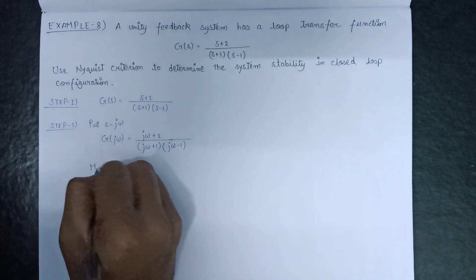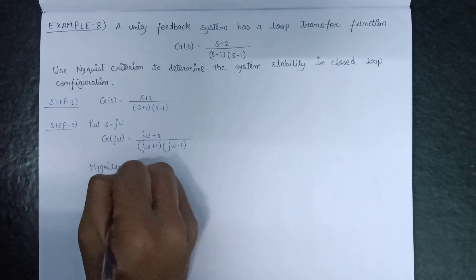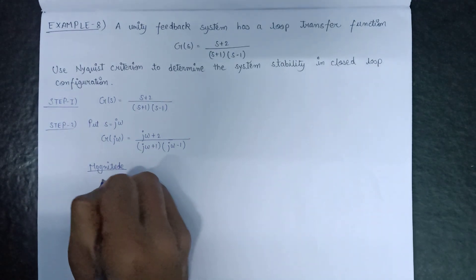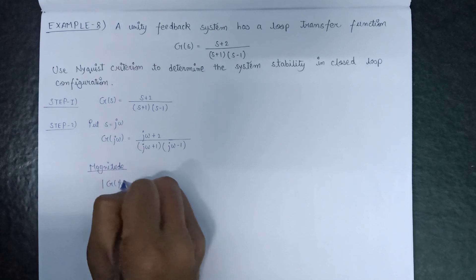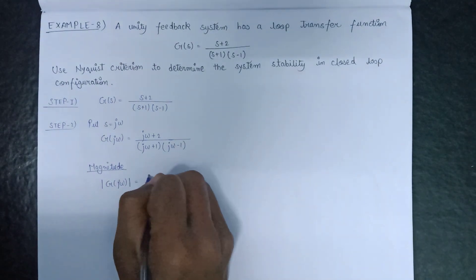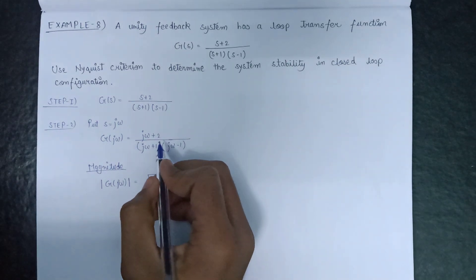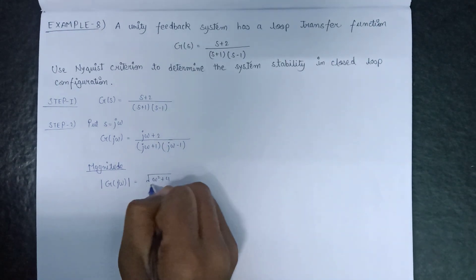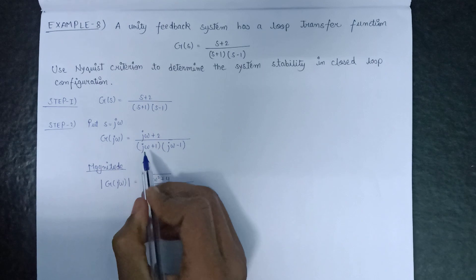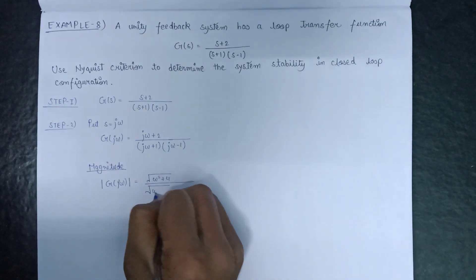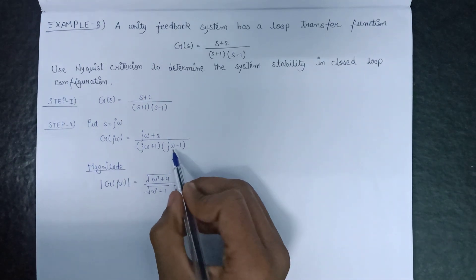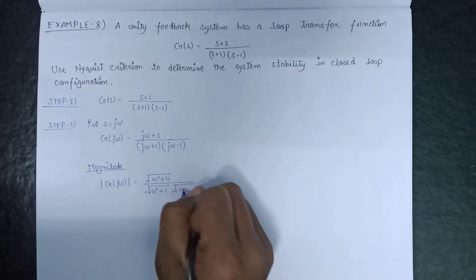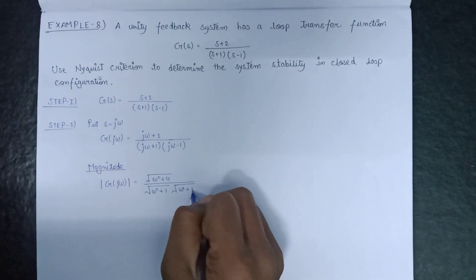Next, we need to find the magnitude. The magnitude |G(jω)| equals √(ω² + 4) divided by √(ω² + 1) × √(ω² + 1). Since (−1)² = 1, the denominator simplifies to (ω² + 1).